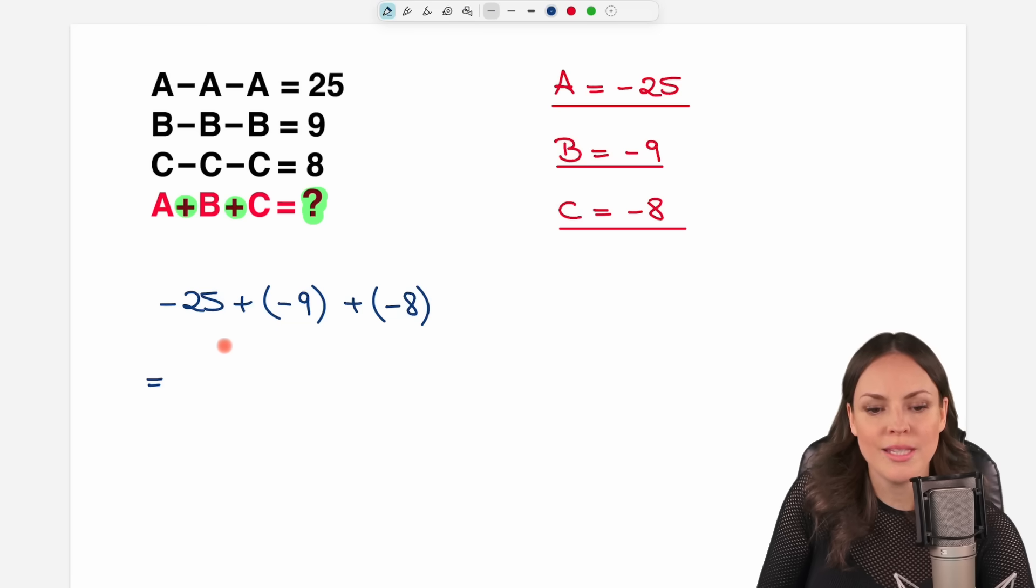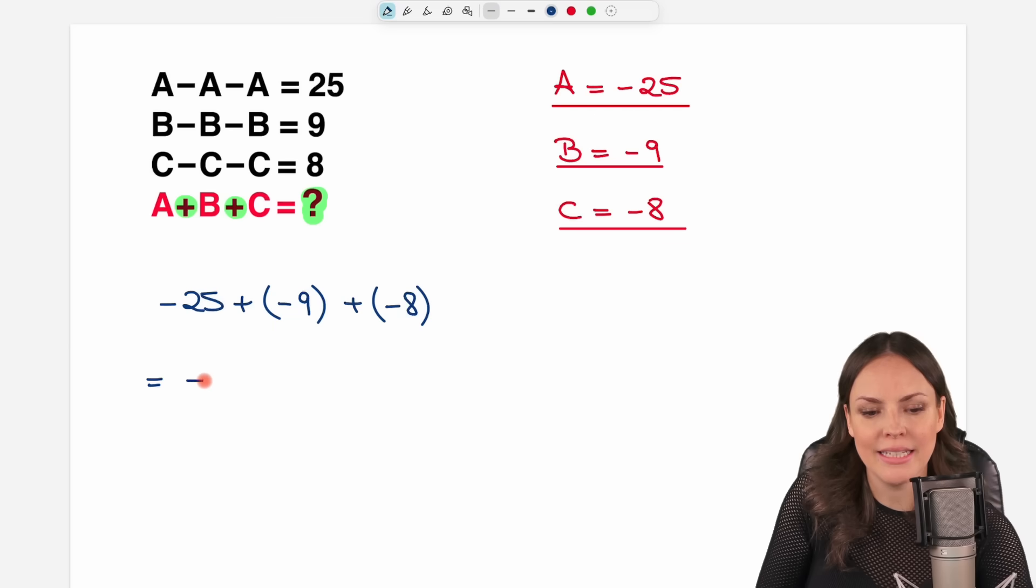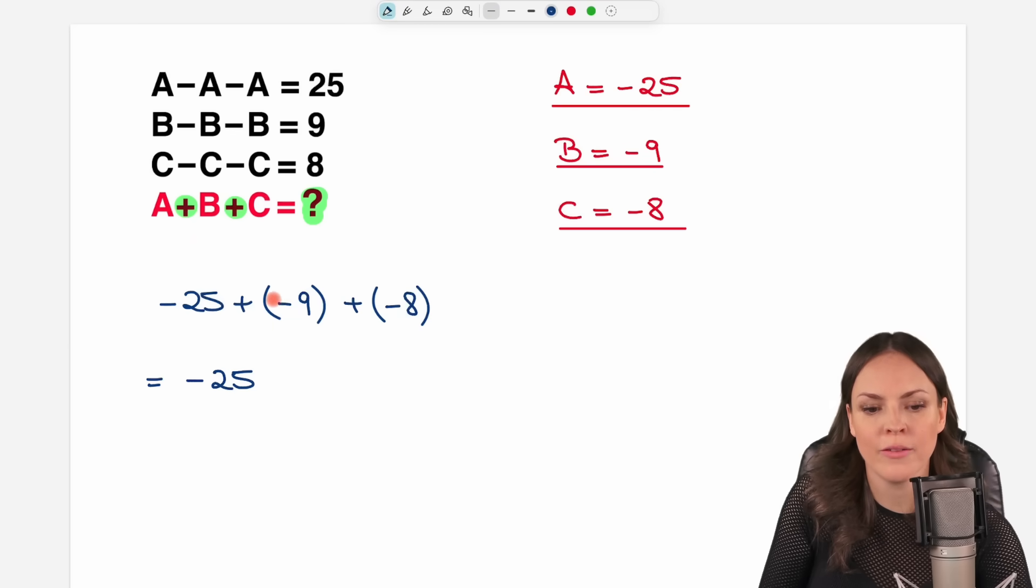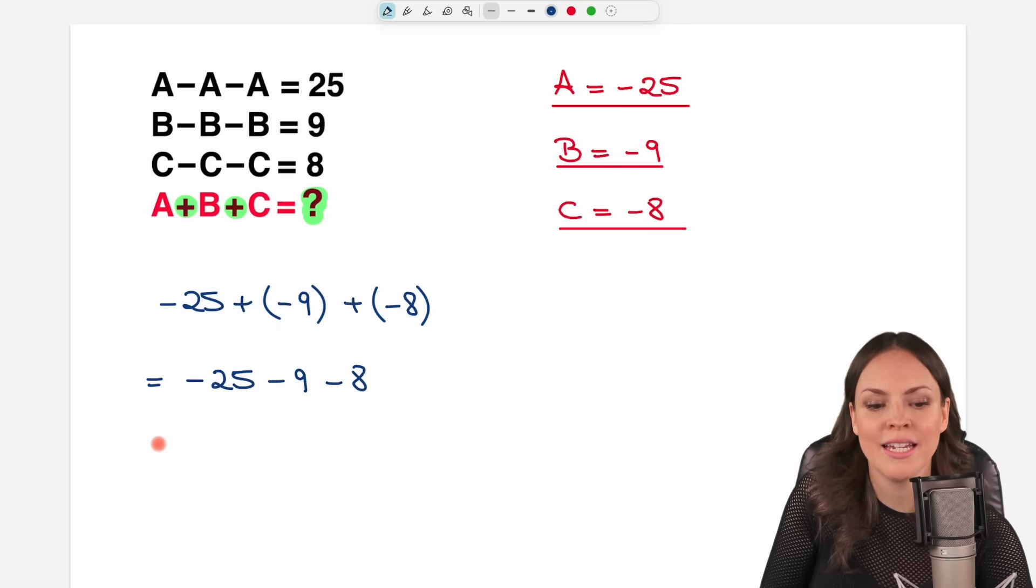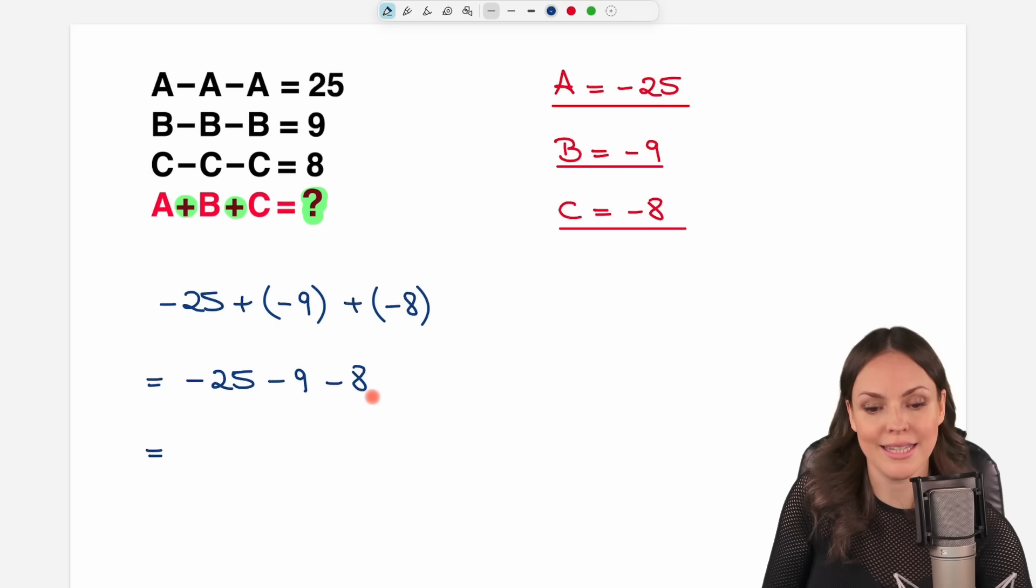So if we simplify this, we have negative 25 plus minus 9 plus minus 8. Now we only have to calculate this.